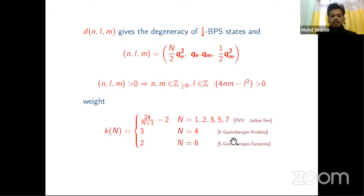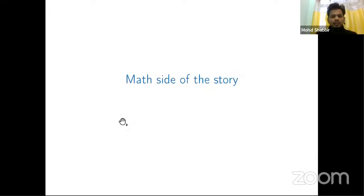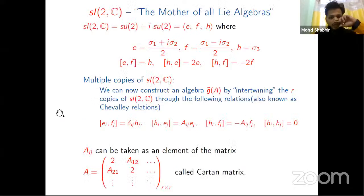Now we discuss the math side of the story. Here we talk about sl(2,C), which is like the mother of all the algebras. We complexify it and we have the generators in terms of Pauli matrices. They have their relations. Now we take multiple copies of sl(2,C) and try to construct a new Lie algebra.